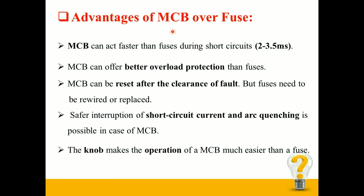The advantages of MCB over conventional fuse: MCB can act faster than fuses during short circuit conditions — as fast as 2 to 3.5 milliseconds. MCB can offer better overload protection than fuses. MCB can be reset after clearance of fault, but fuses need to be rewired or replaced. Safer interruption of short circuit current and arc quenching is possible with MCB. The knob also makes operation much easier than a fuse.